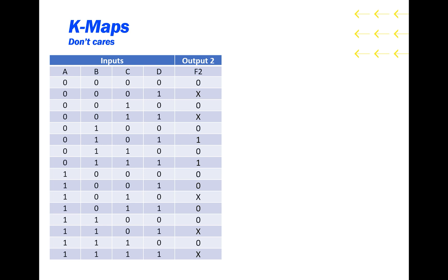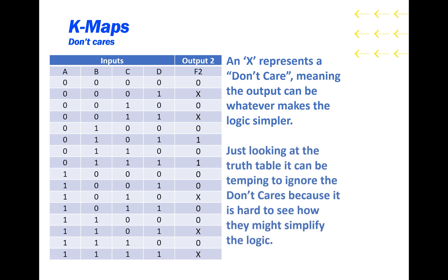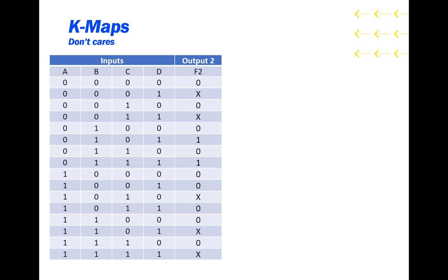Let's try another example with don't cares. An X represents a don't care, meaning the output can be whatever makes the logic simpler. Just looking at the truth table, it can be tempting to ignore the don't cares because it is hard to see how they might simplify the logic.